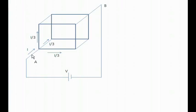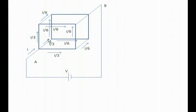When current I enters the network, it will find three different routes. As the network is very uniform, the current will divide equally between the three routes — I/3 will go from each. This I/3 will further divide into two parts: I/6 and I/6 at each branch. Then these currents recombine: I/6 + I/6 = I/3 again at each node, and the three currents of I/3 combine to become the total current I exiting from the network.